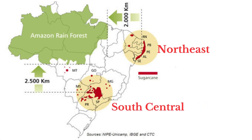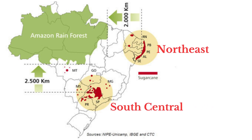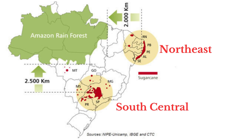Brazil carries out sugarcane cultivation in two main areas. The first is the northeastern region where the plant was first introduced by colonists from Portugal, though this region is less productive. Ninety percent of sugarcane cultivation is carried out in the centre-south in rural areas around São Paulo. The land area used for sugarcane cultivation in Brazil is much larger than in Guyana, so the country is able to produce much more sugarcane.